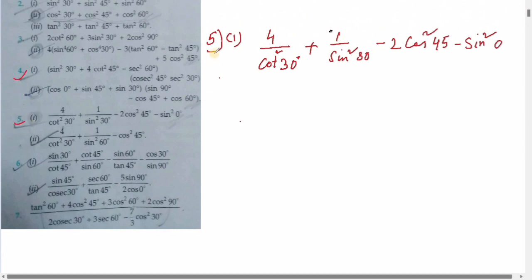Number 5 is 1. 4 by cot square 30 plus 1 by sin square 30 minus 2 into cot square 45 minus sin square 0. So, trigonometric ratios and angles ratios value substitute for this value. It's the solution.